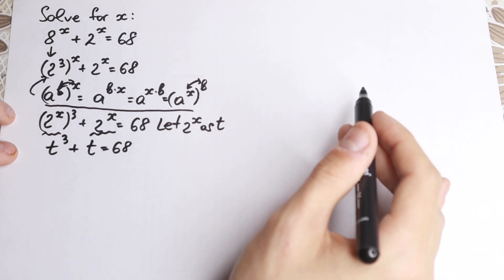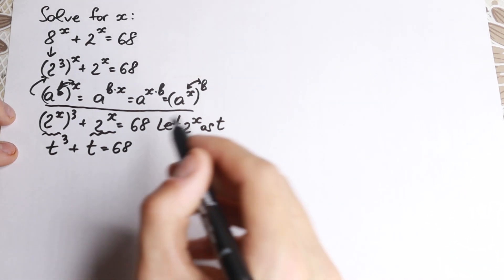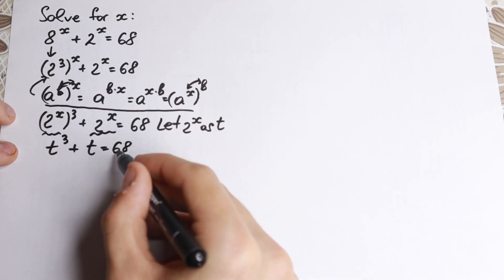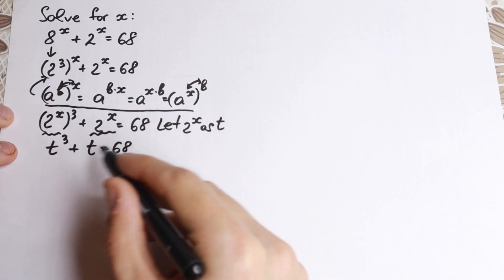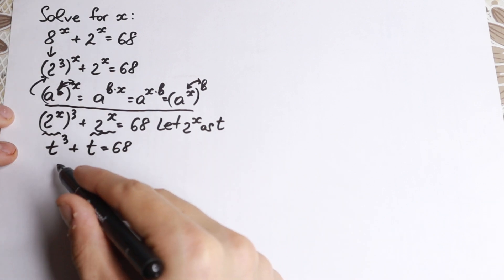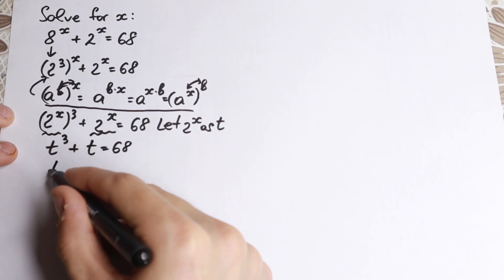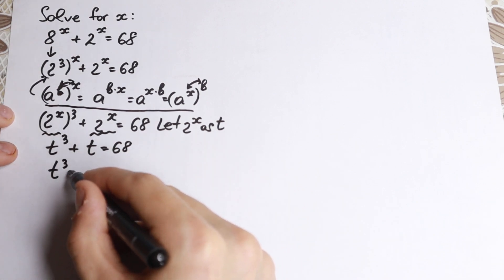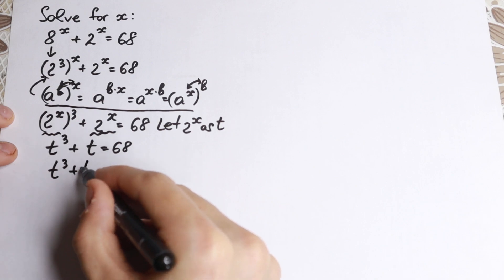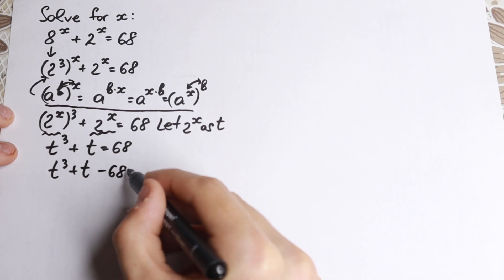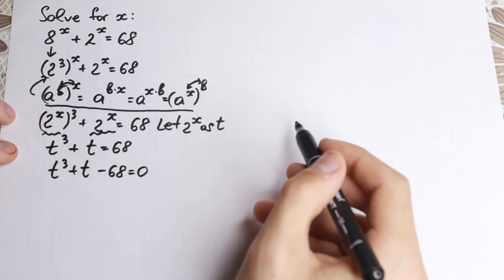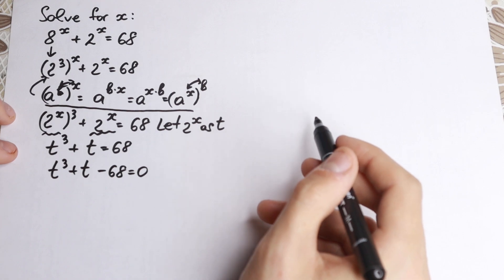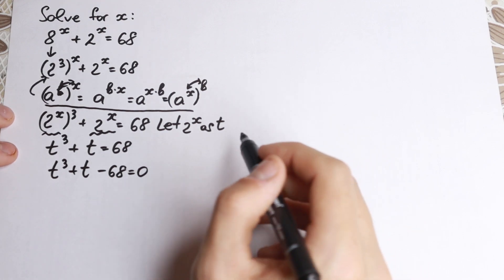Right now it looks like a cubic equation, because if we bring this 68 from the right-hand side to the left-hand side, we will have t cubed plus t minus 68 equal to 0. And right now this is our cubic equation.